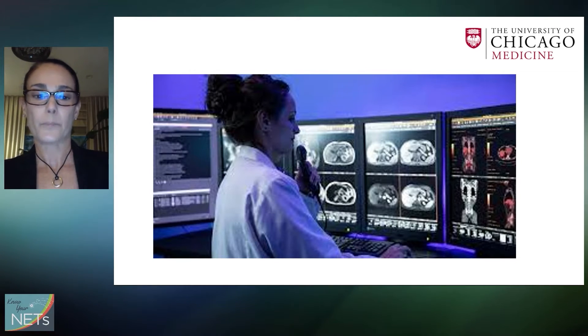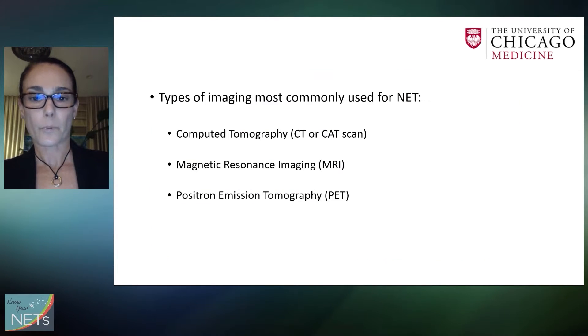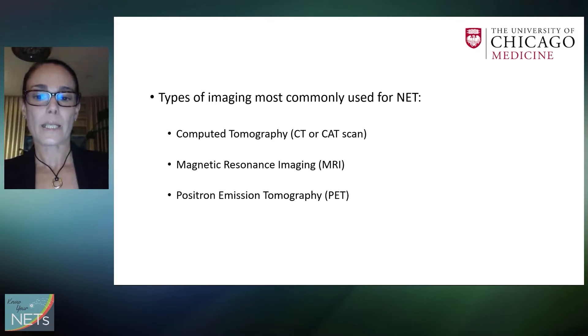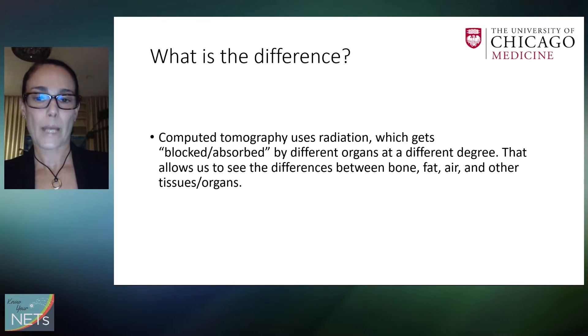I sit in front of all the images we get from you and try to interpret them, comparing them with others, and give your doctor a report. The types of imaging most commonly used for neuroendocrine tumors include computer tomography — a CT or CAT scan — magnetic resonance imaging, or MRI, and positron emission tomography, or PET.